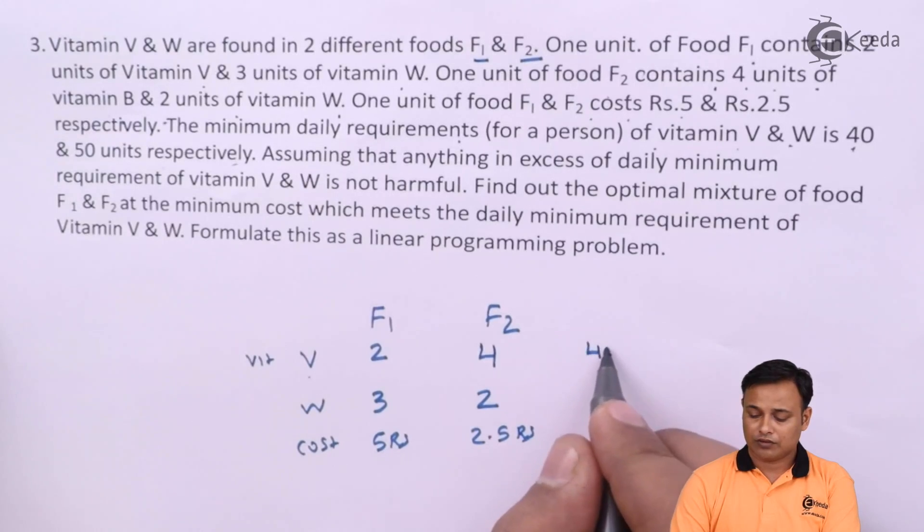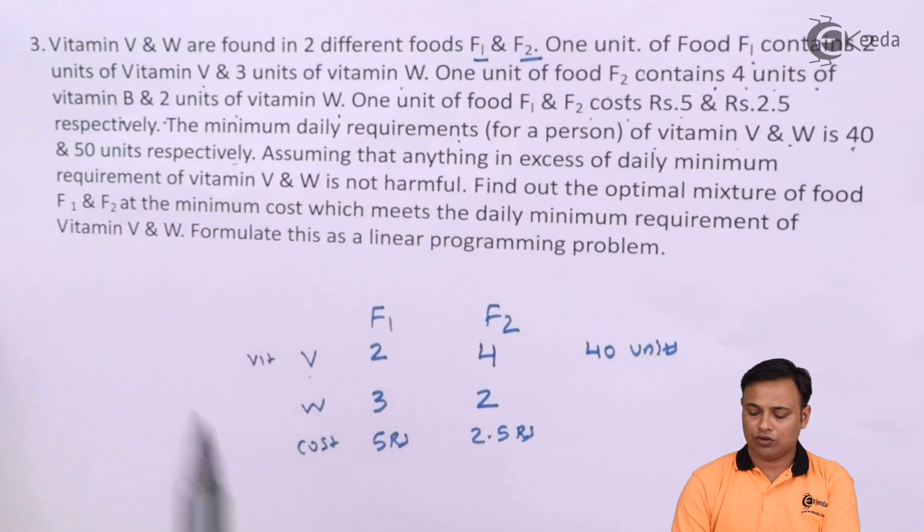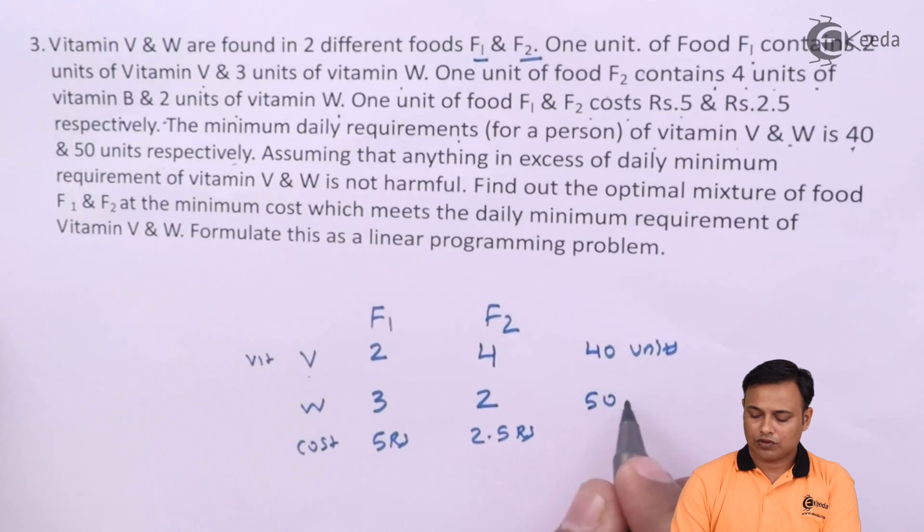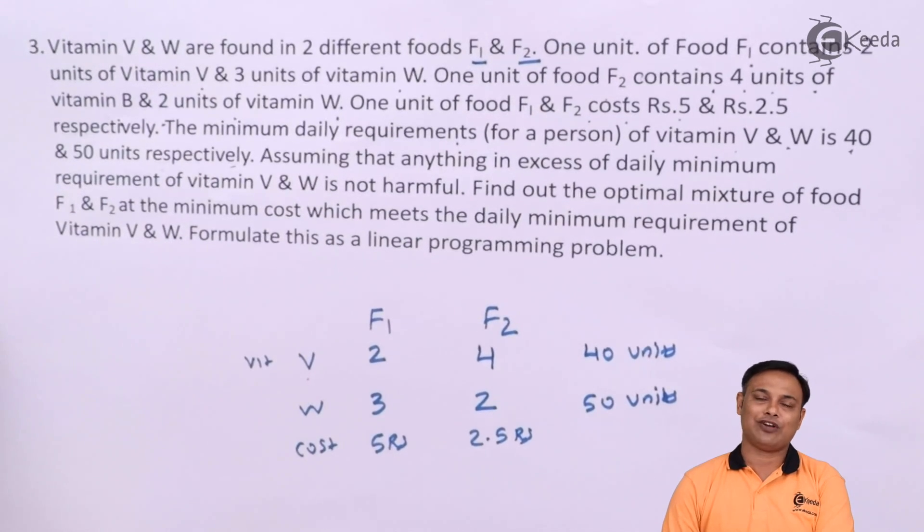Vitamin V got 40 units. Vitamin W 50 units. This is my daily requirement.